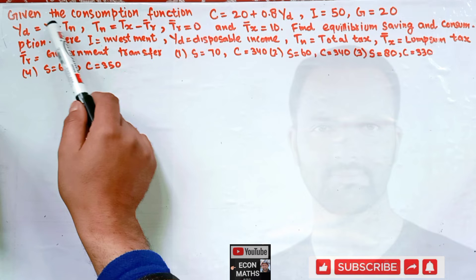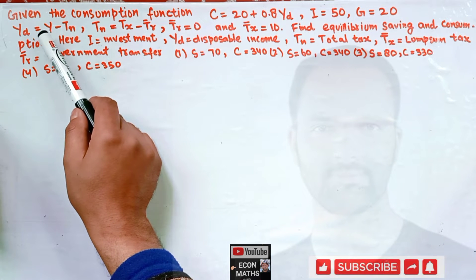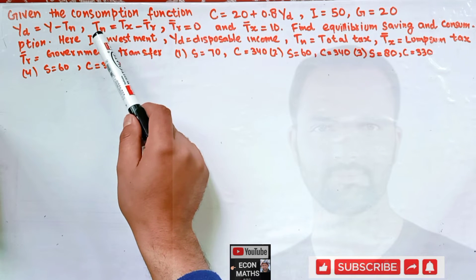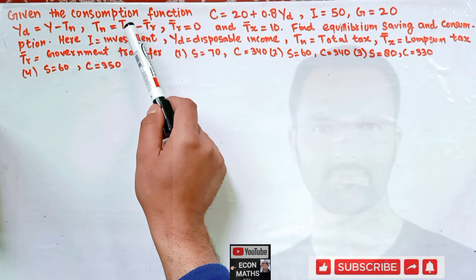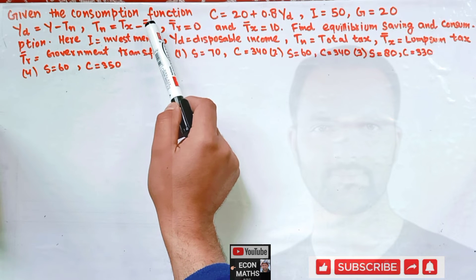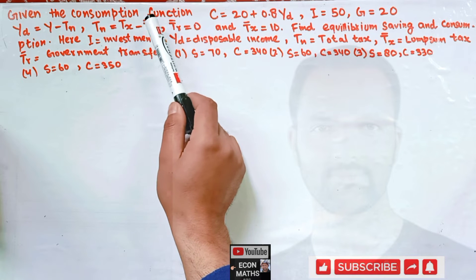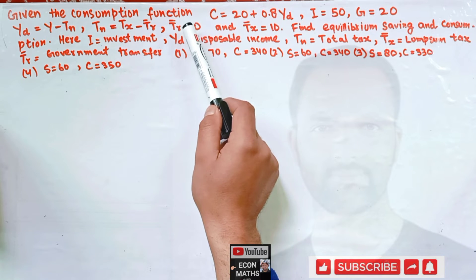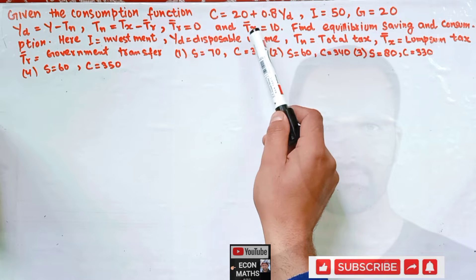Disposable income is given by Yd = Y − TN, where Y is income and TN is total tax. Total tax is given by TN = TX̄ − T̄R, where TX̄ is lump sum tax and T̄R is government transfer. Here T̄R = 0, meaning there is no government transfer, and the lump sum tax TX̄ is given as 10.